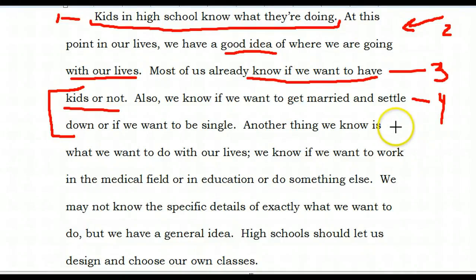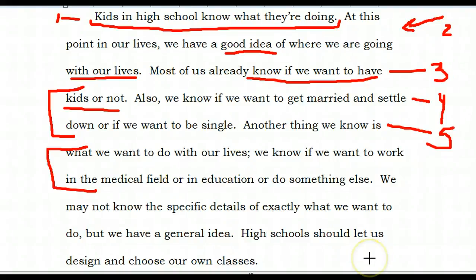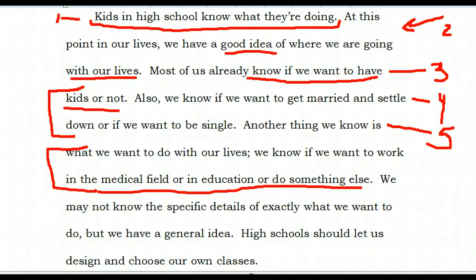Let's take a look at sentence number five: 'Another thing we know is what we want to do with our lives. We know if we want to work in the medical field or in education or do something else.' As an adult, I would say this is actually pretty impossible for most kids to know. There are probably some who really do know from a young age, but what I find more true is that it's in college when they tend to realize what they want to do. In America, most people change careers at least five times in their adult life — you may start out in the medical field, then go to education, then later to something like business. I might even give some specific examples here rather than being broad and vague: how is it that students so young know what they want to do with their lives?